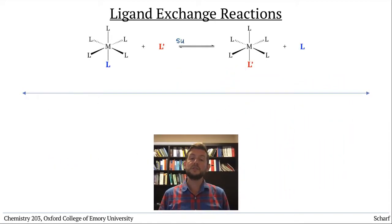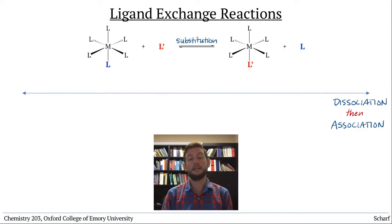Ligand association and dissociation can occur together in a process called ligand substitution or ligand exchange. This is when an incoming ligand displaces an outgoing one, all more or less at once. The mechanisms of ligand exchange vary across a spectrum. At one end of the spectrum, a ligand exchange reaction can occur by first having one ligand dissociate, and then a new ligand associates. This is called dissociative ligand exchange.